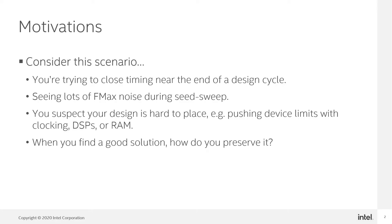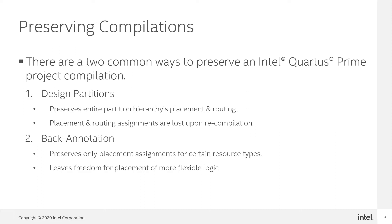Consider the scenario when you're trying to close timing near the end of a design cycle and you're seeing lots of fmax noise during a seed sweep. You suspect that your design is hard to place — that is, you may be pushing the device limits with clocking, DSPs, or RAM. When you do find a good placement solution, how do you preserve it?